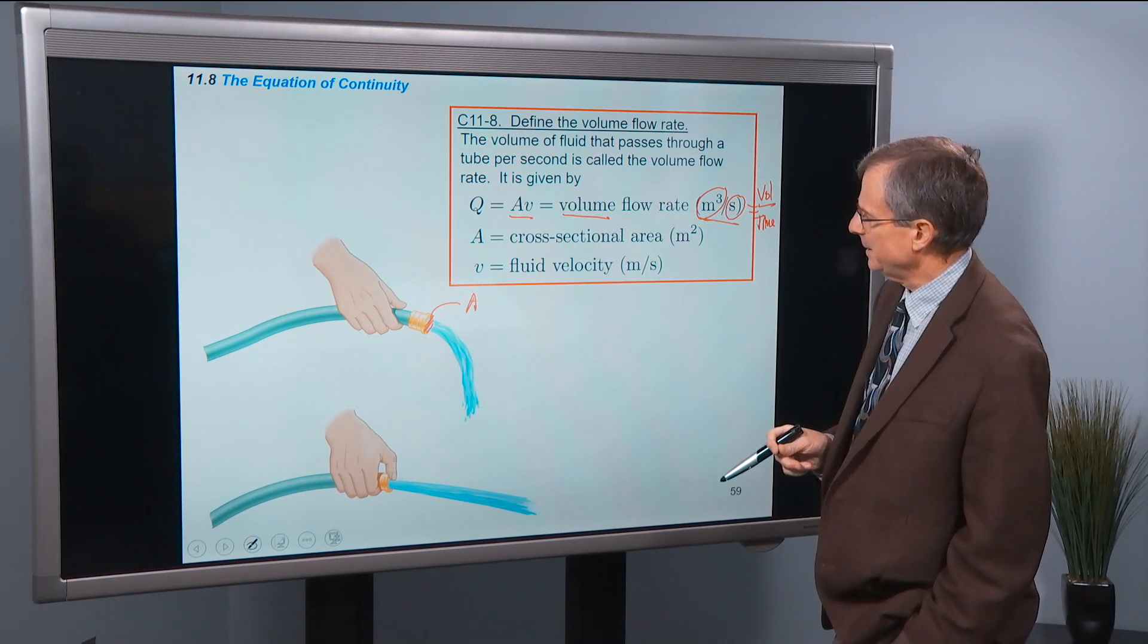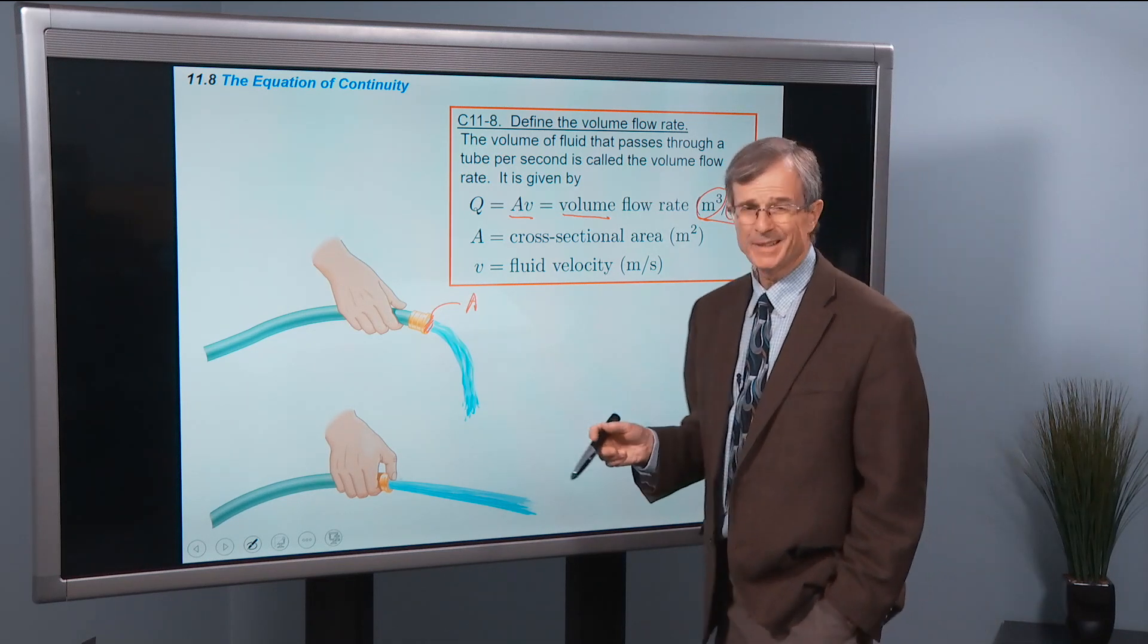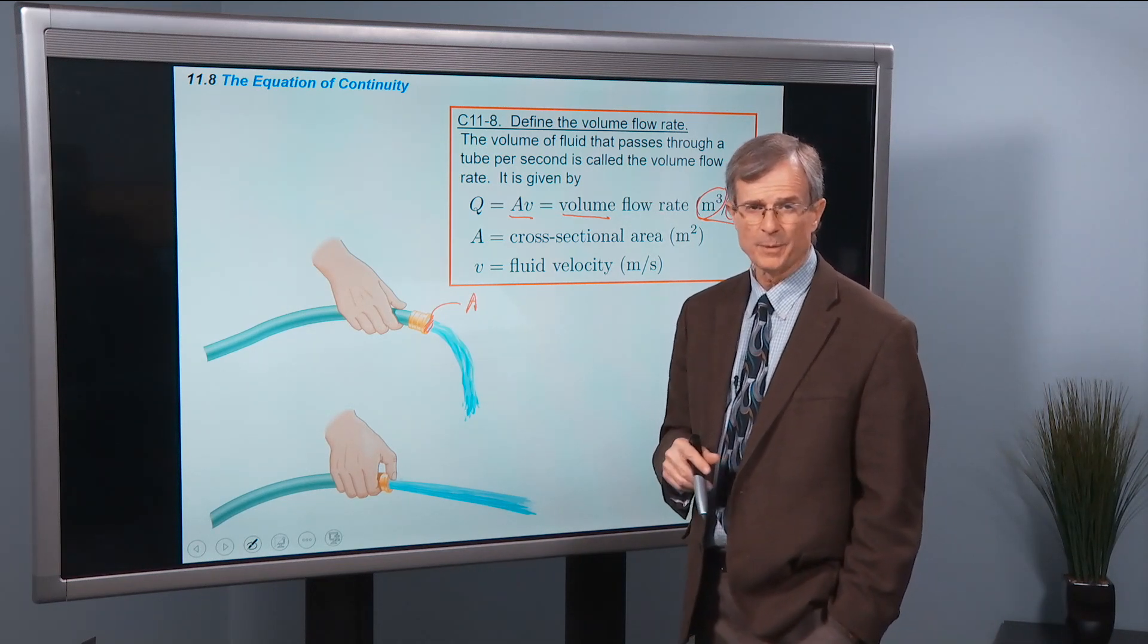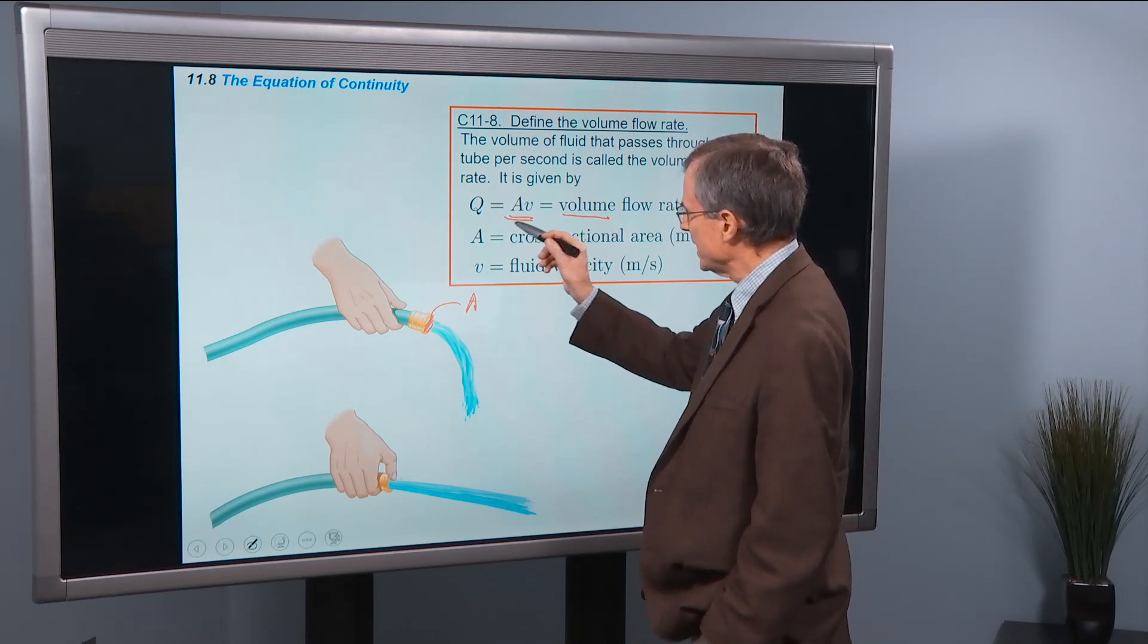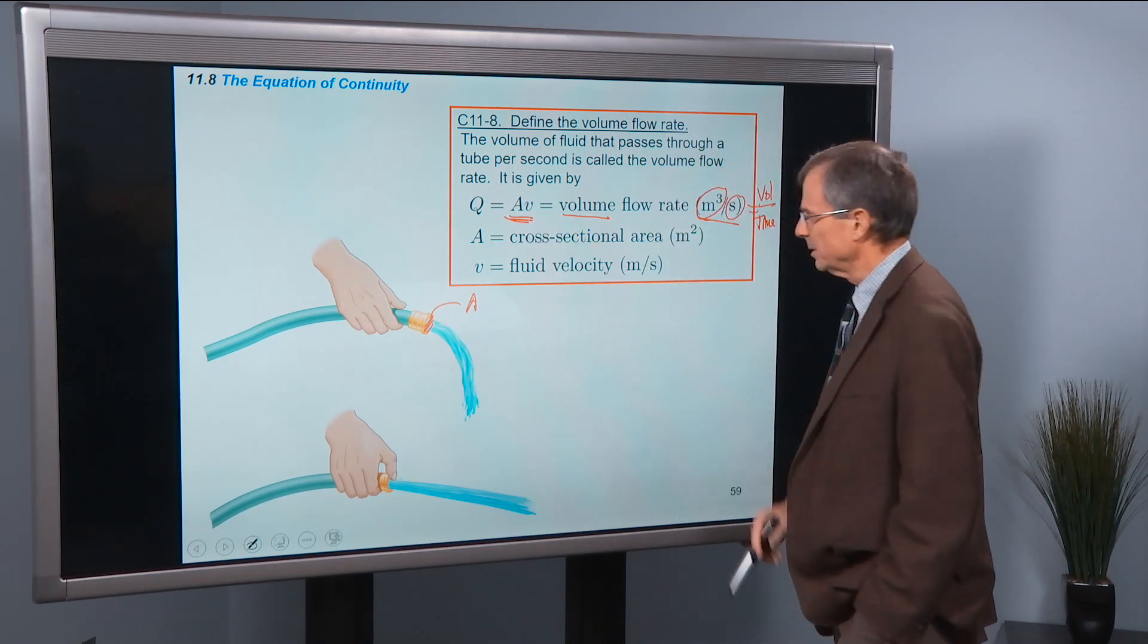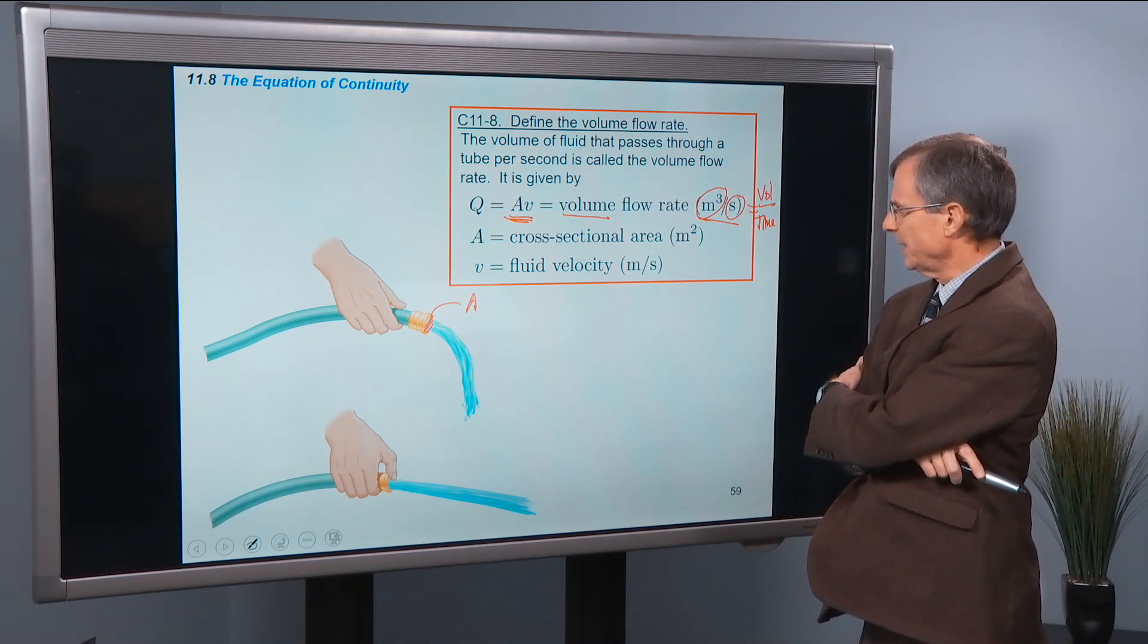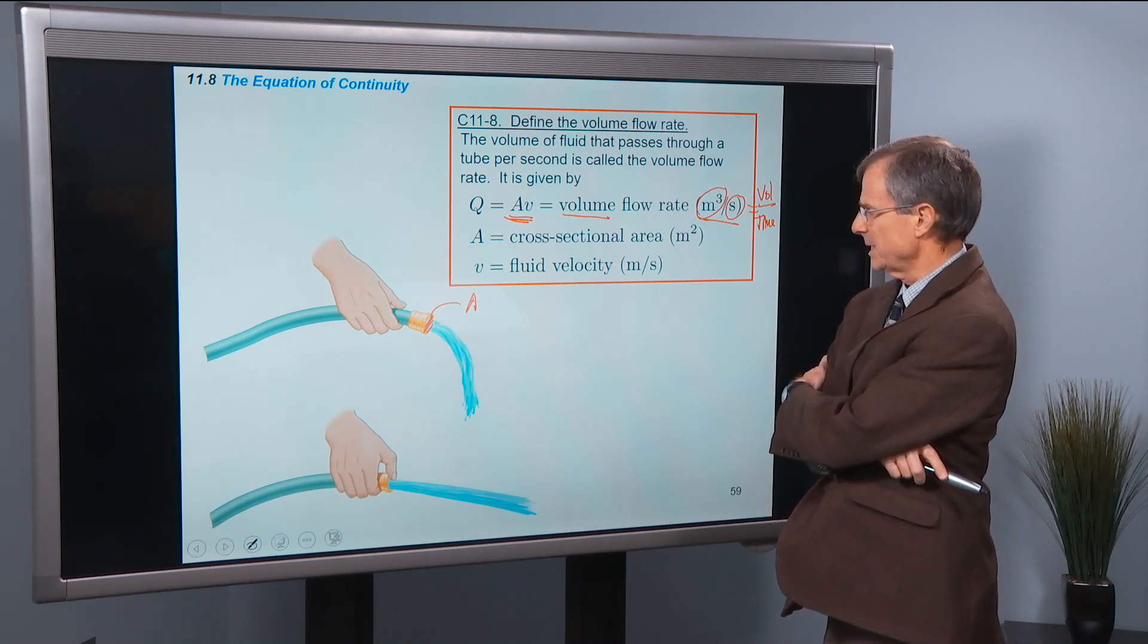And the actual derivation is not that hard. Your book has a nice discussion about it, as I remember. But this turns out to be the volume per unit time. A is the cross-sectional area and V is the fluid velocity.